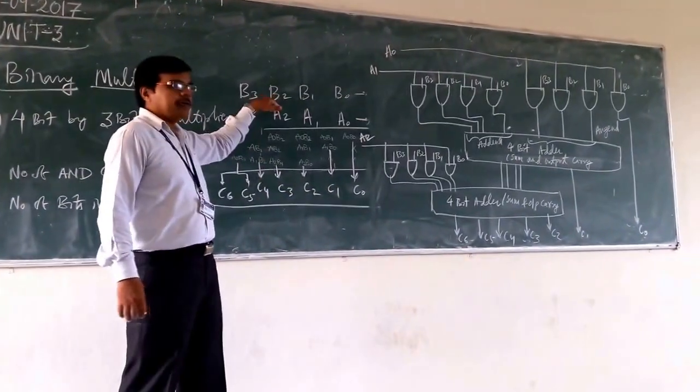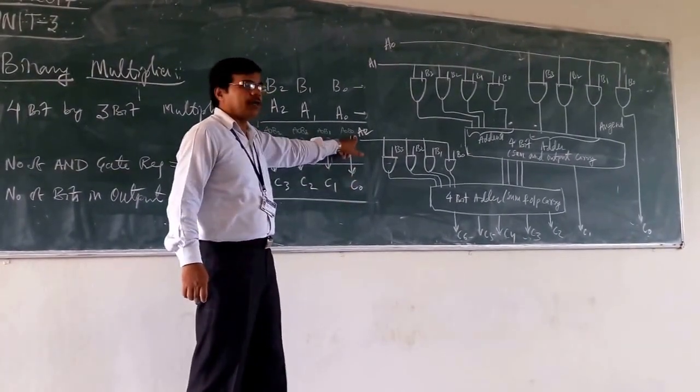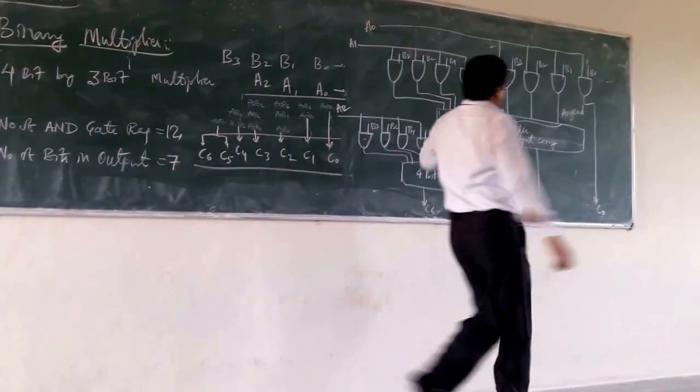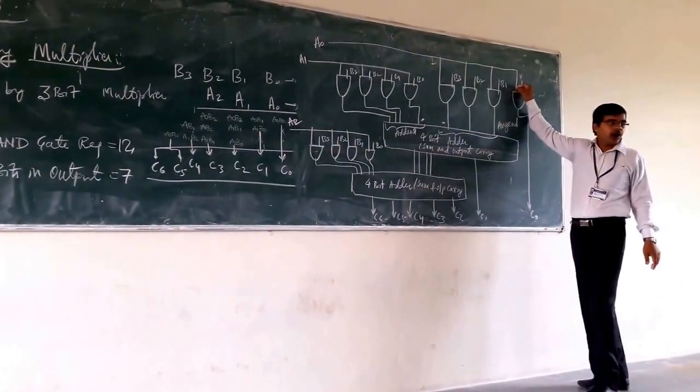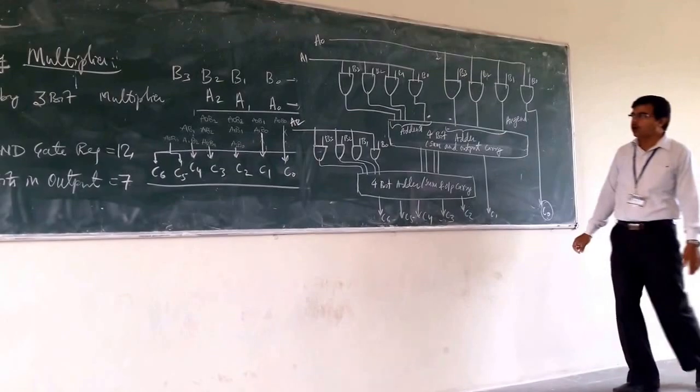Multiplying your 4-bit by 3-bit. If you are seeing your C0, what C0 means? C0 means your A0 and B0. So directly here you are having gate A0 and B0, we are taking it, this is becoming your C0.